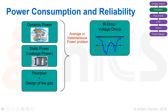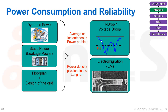IR drop is the average power drop. If the voltage, instead of being the constant VDD we always assume, starts jumping around, we can have a point where our cells fail to work correctly. The other issue is a power density problem in the long run, where sending a lot of current through a conductor can cause it to break or short — that's called electromigration.